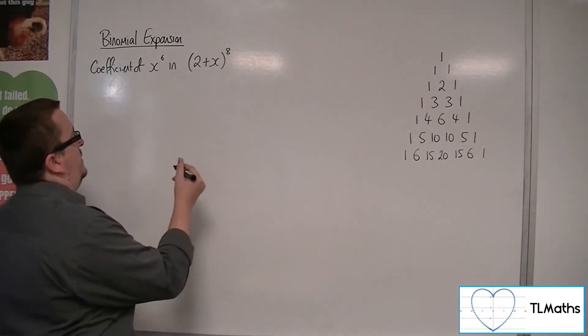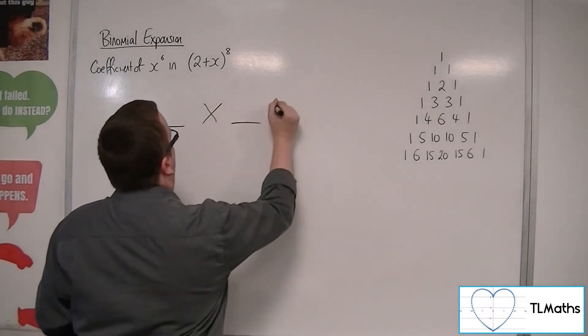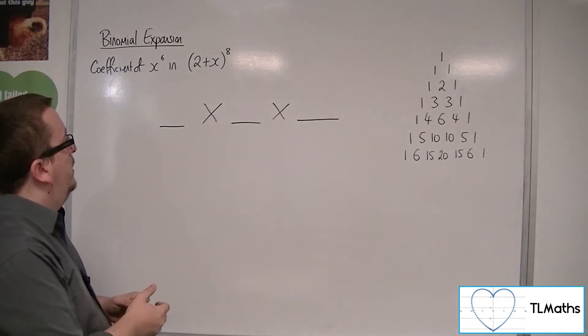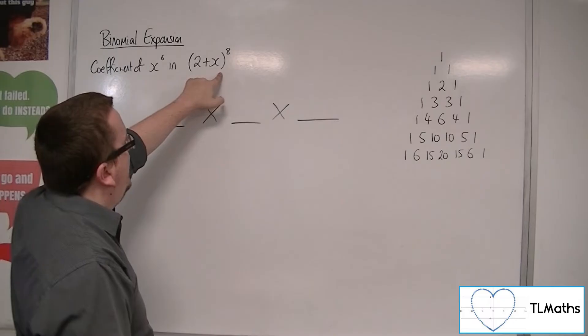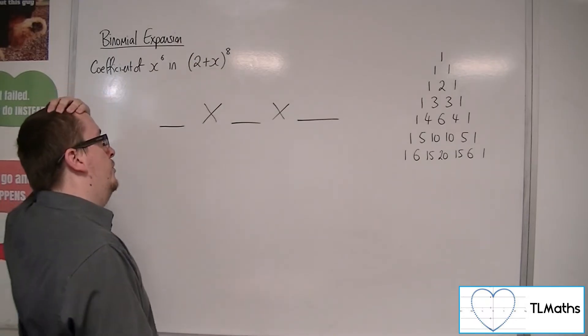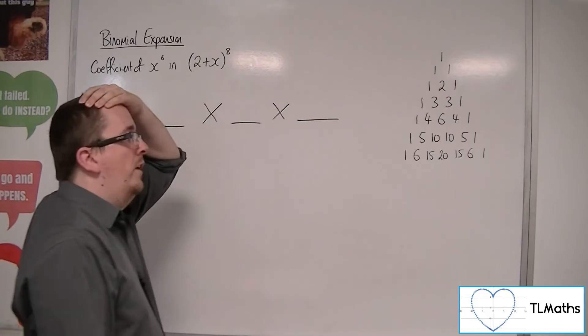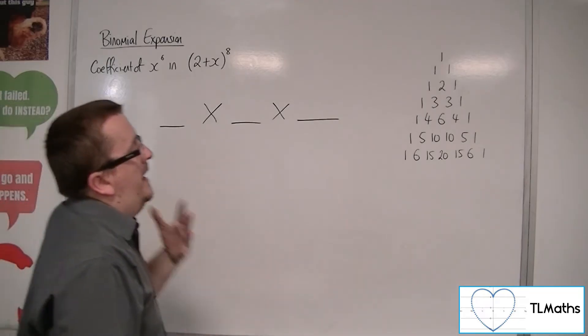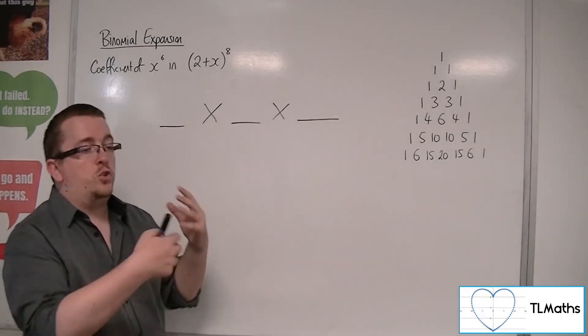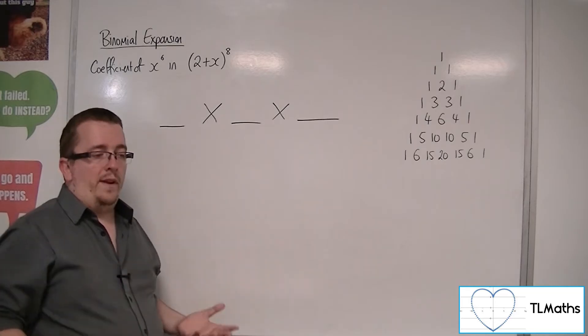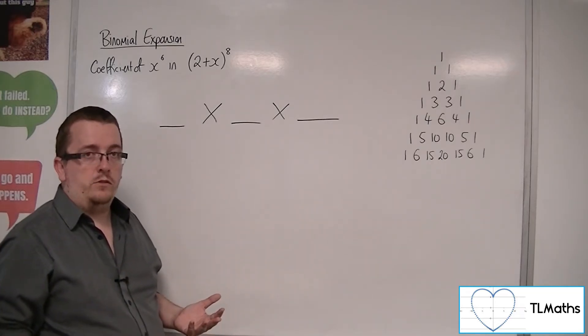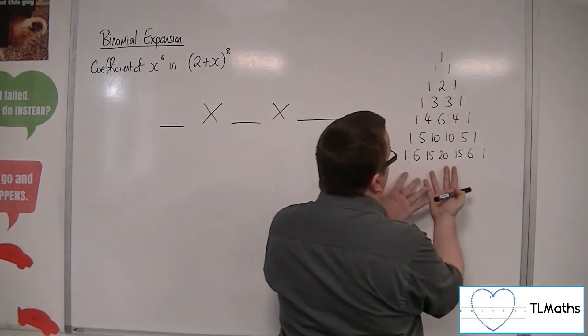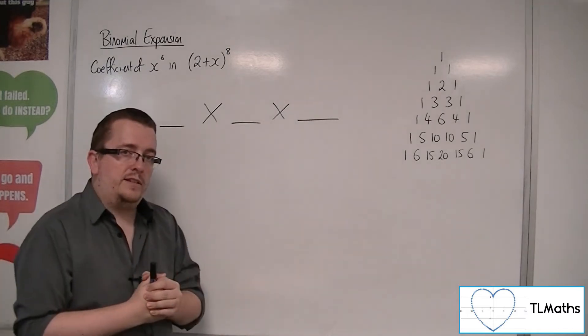Now we know that each of the terms in the binomial expansion have these three parts. So I've chosen 2 plus x to the 8 because theoretically I could figure out what it is. I could write down the Pascal's triangle to 8. But if I was looking at it to 20, I wouldn't want to have to write down the 20th row of Pascal's triangle.